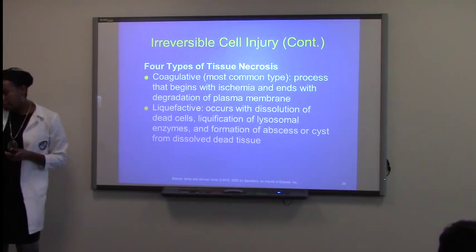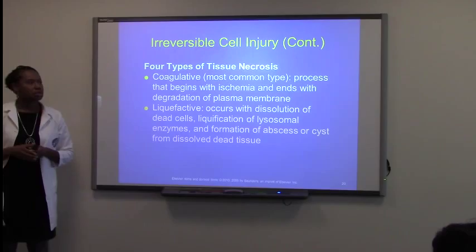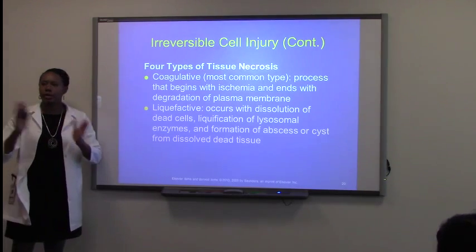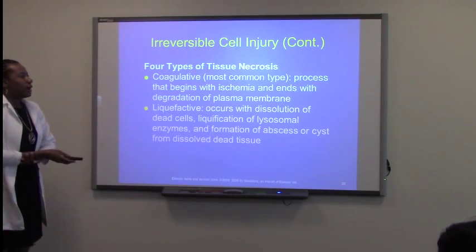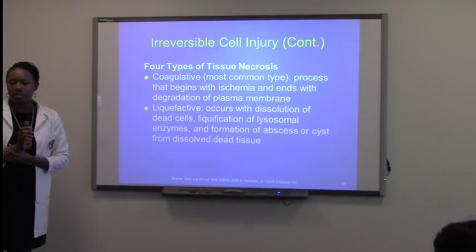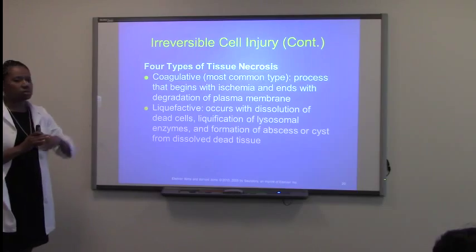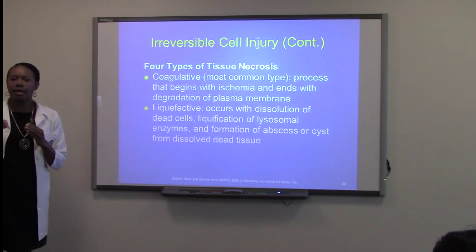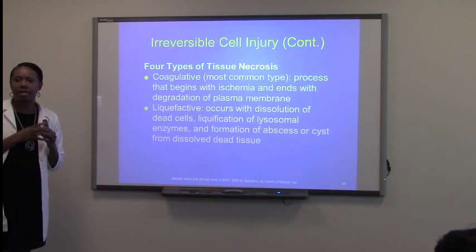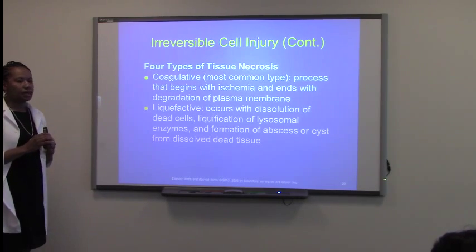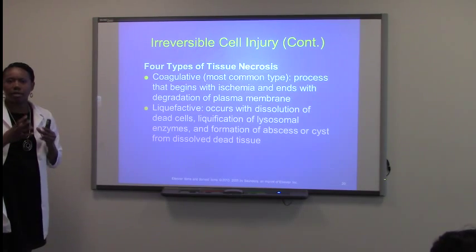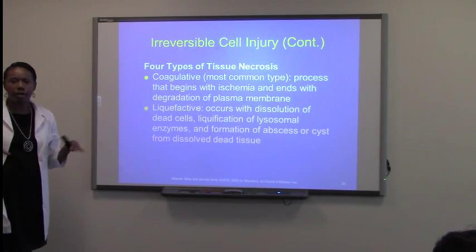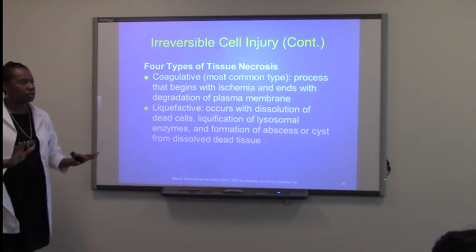There are four different types of necrosis, and then we're going to go over gangrene and compare and contrast the two. Coagulative necrosis is the most common, and this is also the one that is definitely from ischemia — the lack of blood supply getting to the organ or tissue — and it will cause degradation of that plasma membrane where the cell membrane just breaks off and everything starts to die.